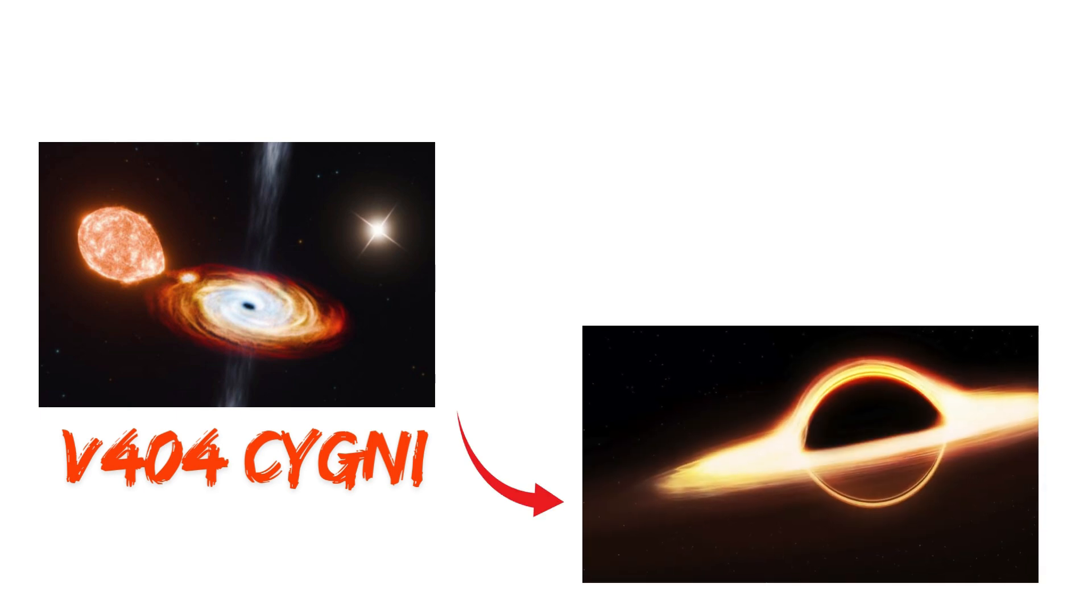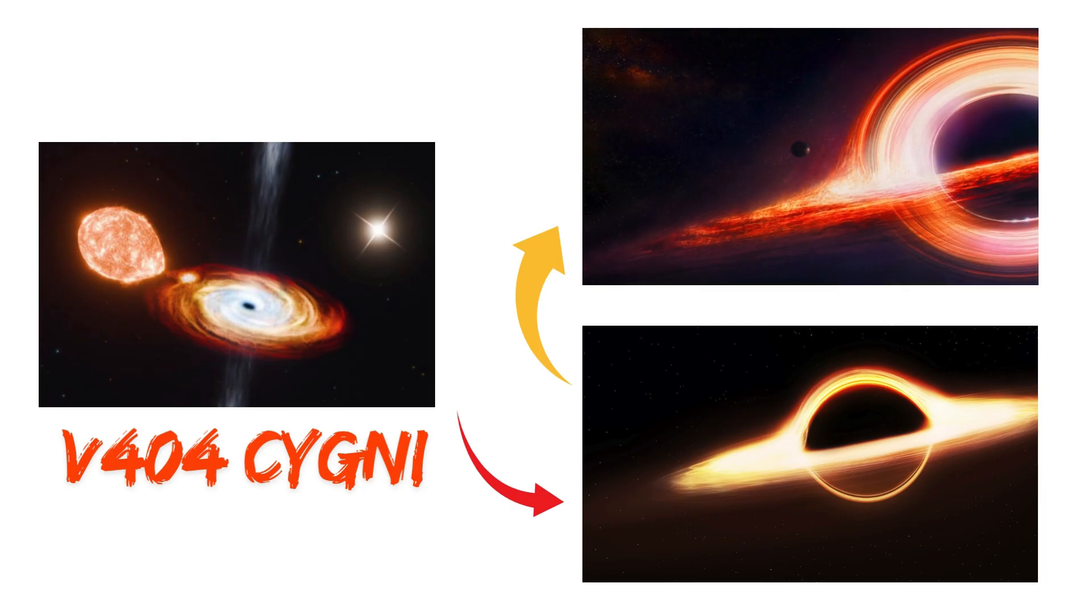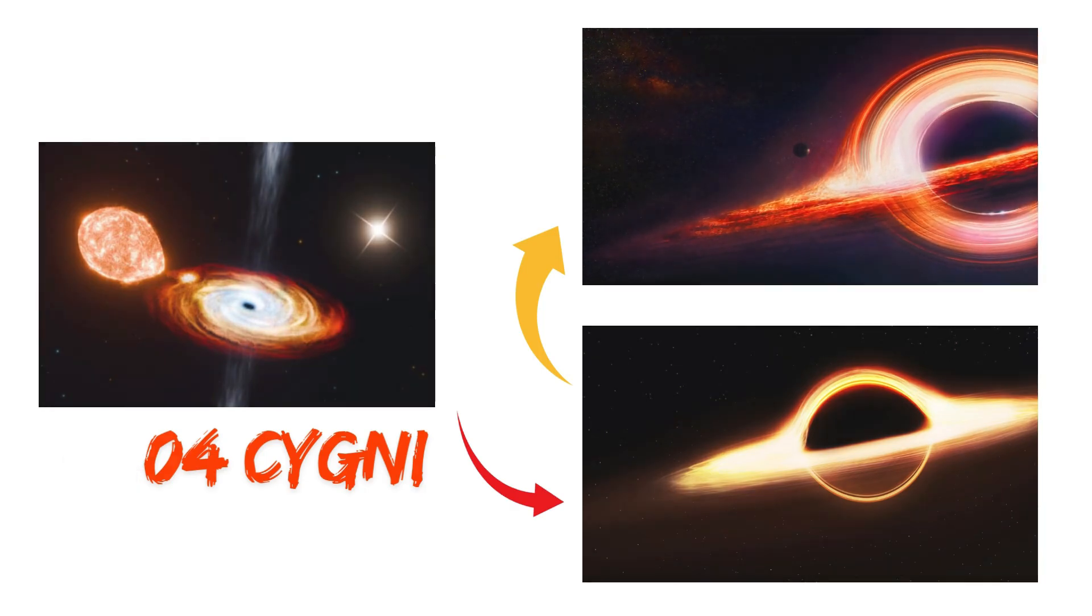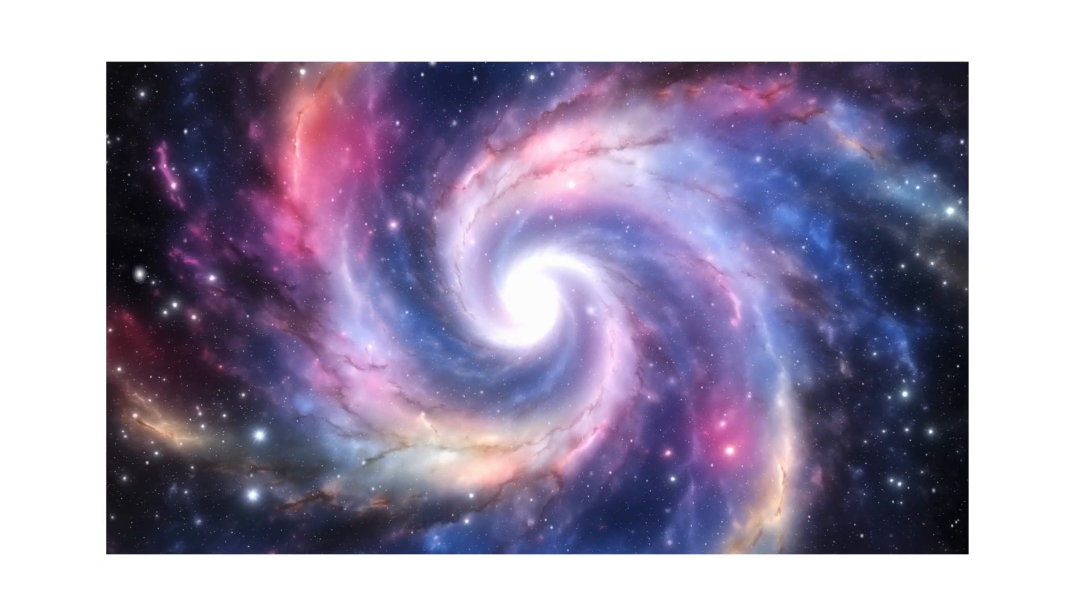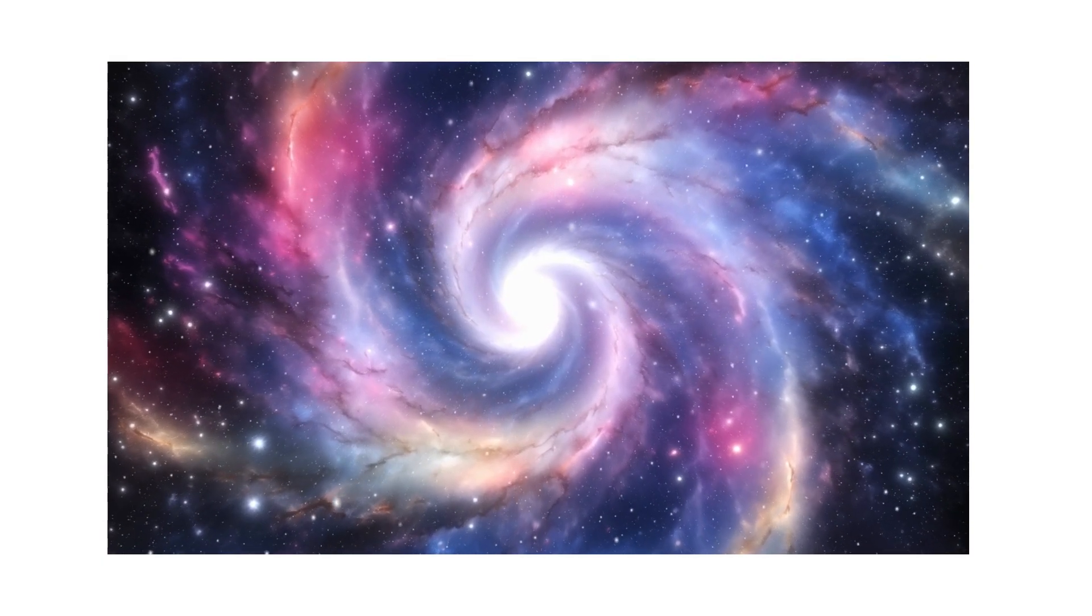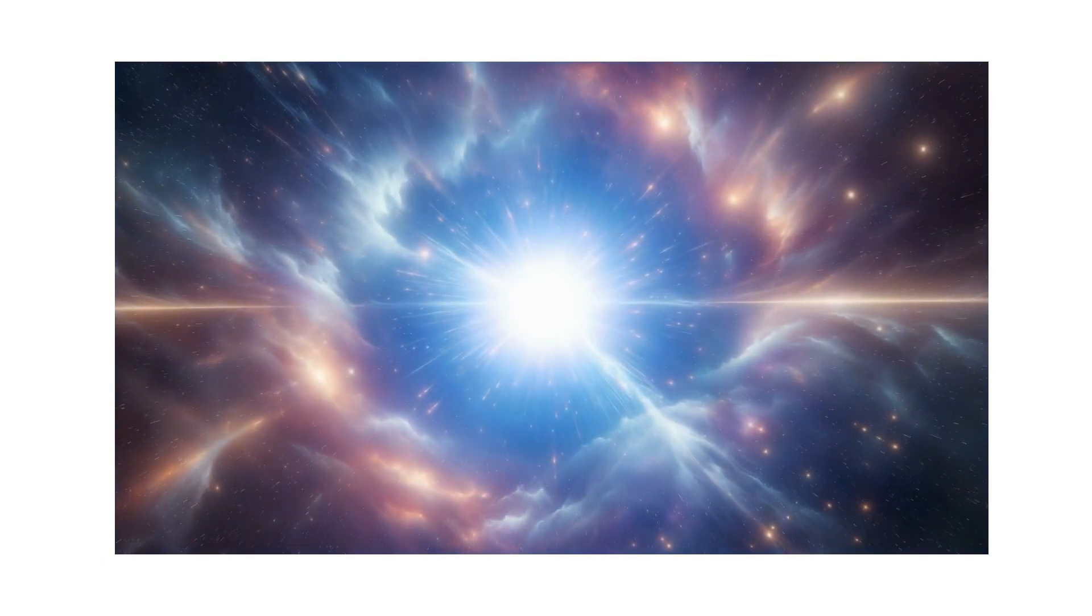V-404 Cygni is another nearby binary system. It contains a stellar mass black hole that undergoes periodic outbursts when large amounts of matter suddenly fall in. These eruptions release intense x-rays and relativistic jets. A close encounter with such a system would flood space with deadly radiation, threatening any biosphere in range.